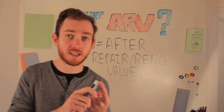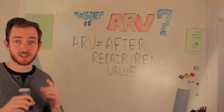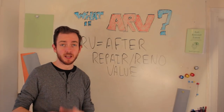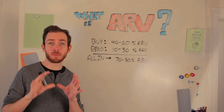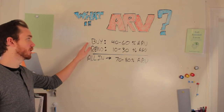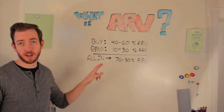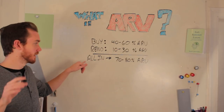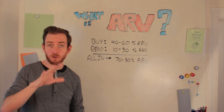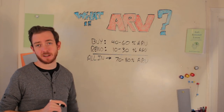Whether you're doing the BURR Investing Strategy or flipping real estate, you're going to need to know what ARV is in order to calculate your potential profit, potential margin, and figure out what you're going to make on that deal. When looking at whether burring or flipping a property, we're usually looking to buy it for 40 to 60% of the ARV, reno it for 10 to 30% of the ARV, so we end up approximately 70 to 80% of the ARV all in, including holding and closing costs.